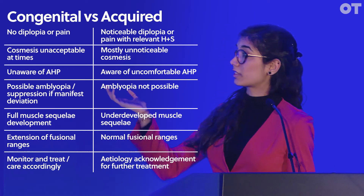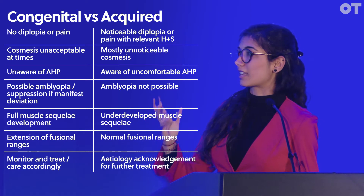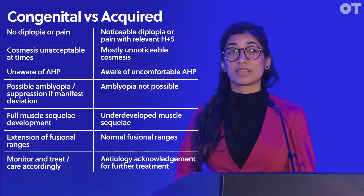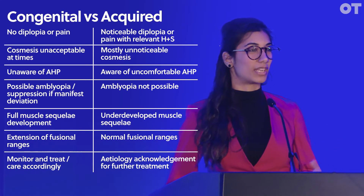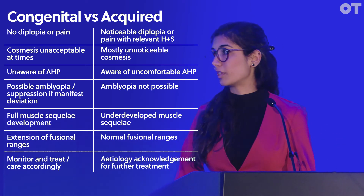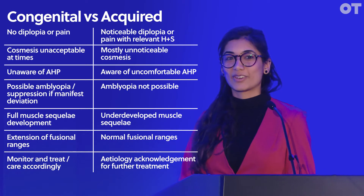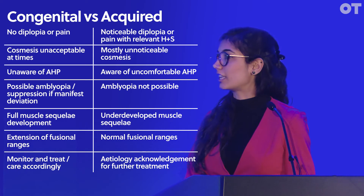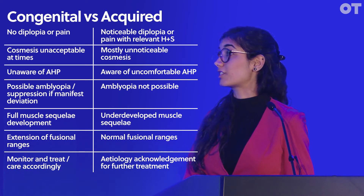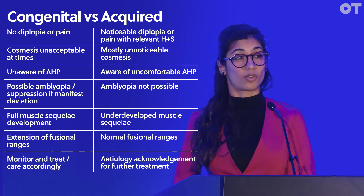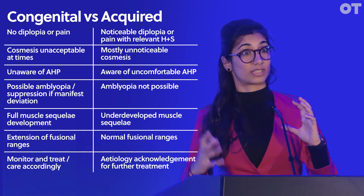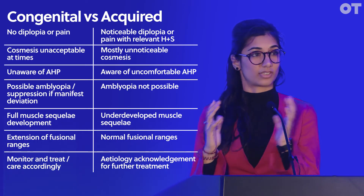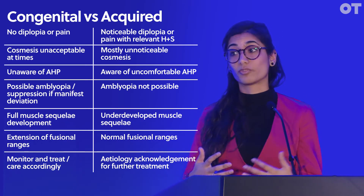There are a few other factors on the slide, like amblyopia. You'll probably find that in a congenital manifest deviation, because it's been there for so long, there's likely some suppression or amblyopia. With muscle sequelae, if it's an acquired deviation, you probably wouldn't see much — the contralateral muscle compensates for the underaction, trying to equalise the eyes and reduce double vision.